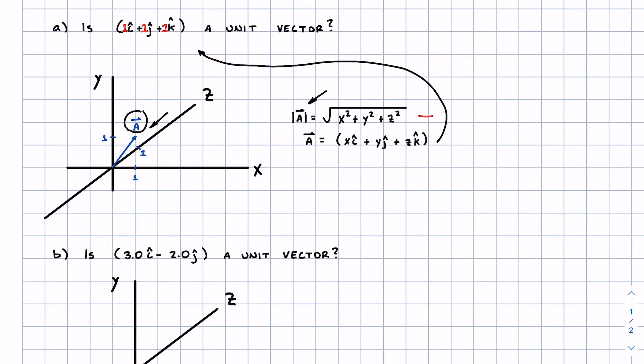So that means in this equation we're going to be plugging in one for x, one for y, and one for z. So that gives us magnitude of A vector is equal to the square root of one squared plus one squared plus one squared.